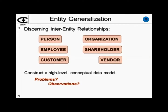Let's suppose that we talk to the user and we're finding that they're using all of these kinds of names for things. What might you observe, or what problems might you find? We've already talked about employee and customer. Is an employee a type of person? Could a customer be an organization or a person? Could an employee be a shareholder? Lots of overlap.